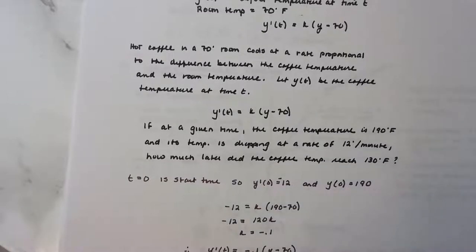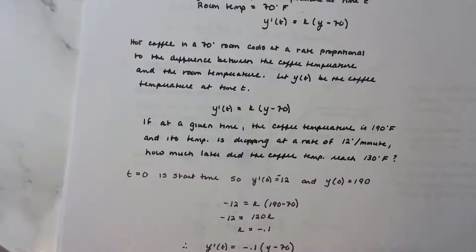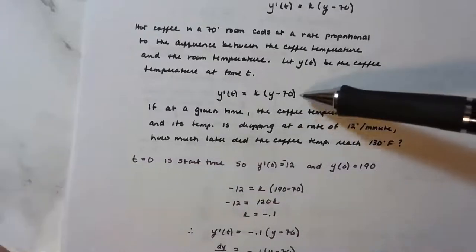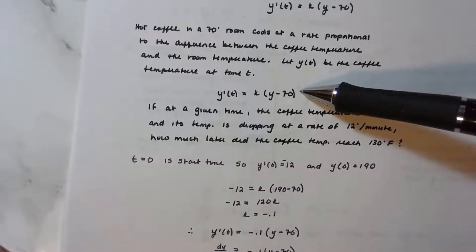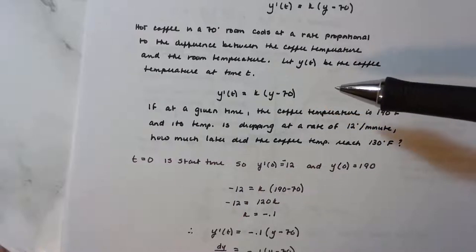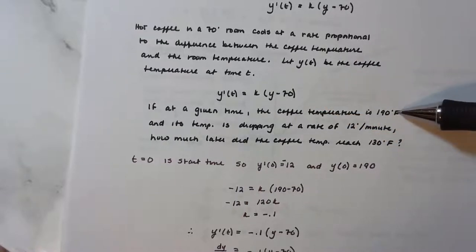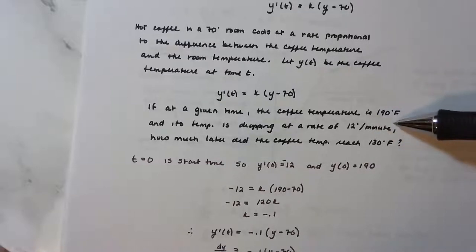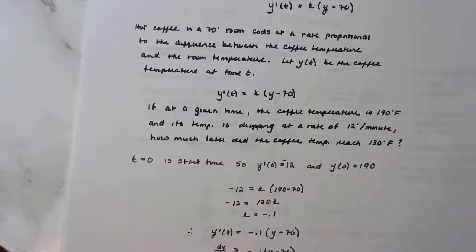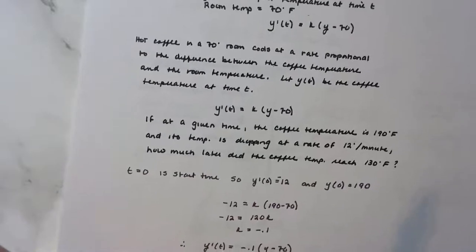Let y(t) be the coffee temperature at time t. The differential equation models this rate. If at some moment the coffee temperature is 190 degrees and it is dropping at a rate of 12 degrees per minute, how much later did the coffee temperature reach 130 degrees Fahrenheit? This is an initial condition type of problem.